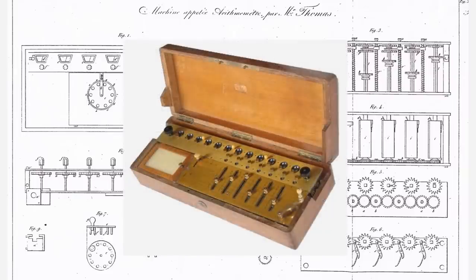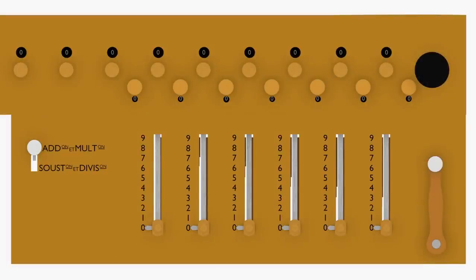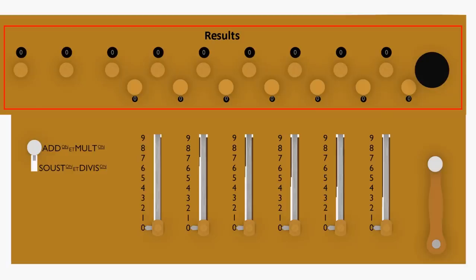The machine described in this video is the so-called 1865 model. The Arithmometer is simple to use. The upper part of the calculator contains the accumulator dials that display results.